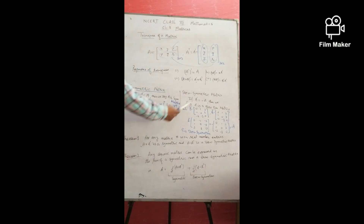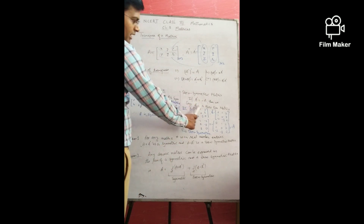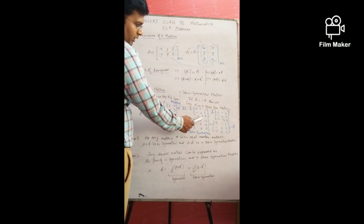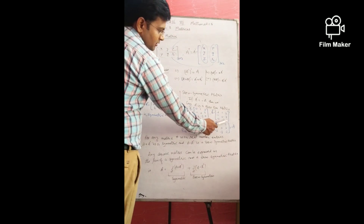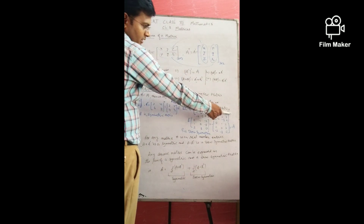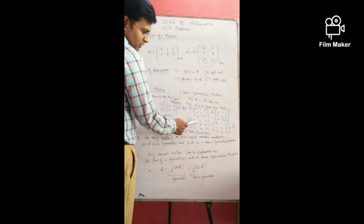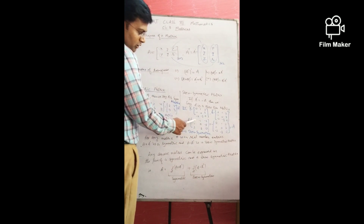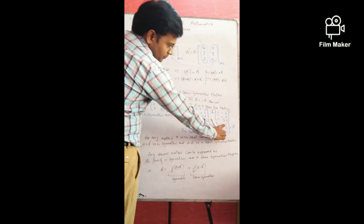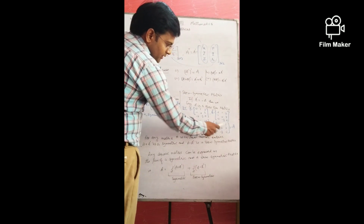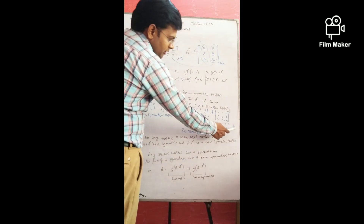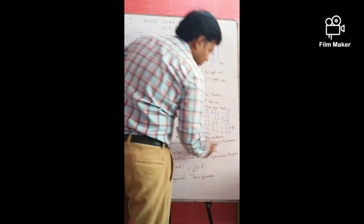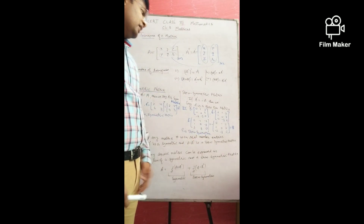For skew-symmetric matrix, if A transpose = −A, then A is skew-symmetric. For example, the 3×3 matrix [0, 1, 2; −1, 0, 3; −2, −3, 0] — when you take its transpose and factor out −1, you get back the original matrix with a negative sign, confirming A transpose = −A, so it is skew-symmetric.